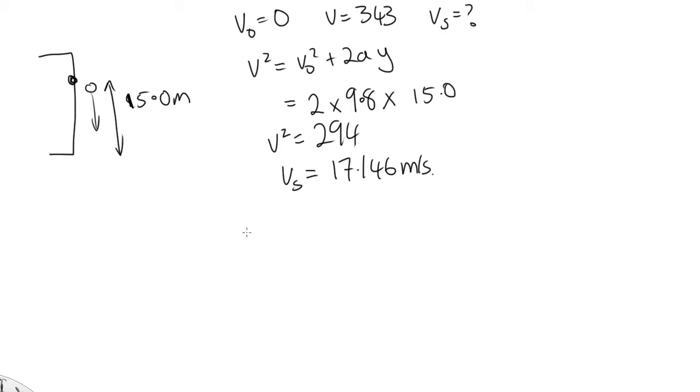Now, if the source and the observer are moving towards each other, the observed frequency is equal to v plus v0 over v minus vs times f. In this case, the observer has no velocity, and the source is actually moving away from our observer. So we're going to have to change this to a positive sign.